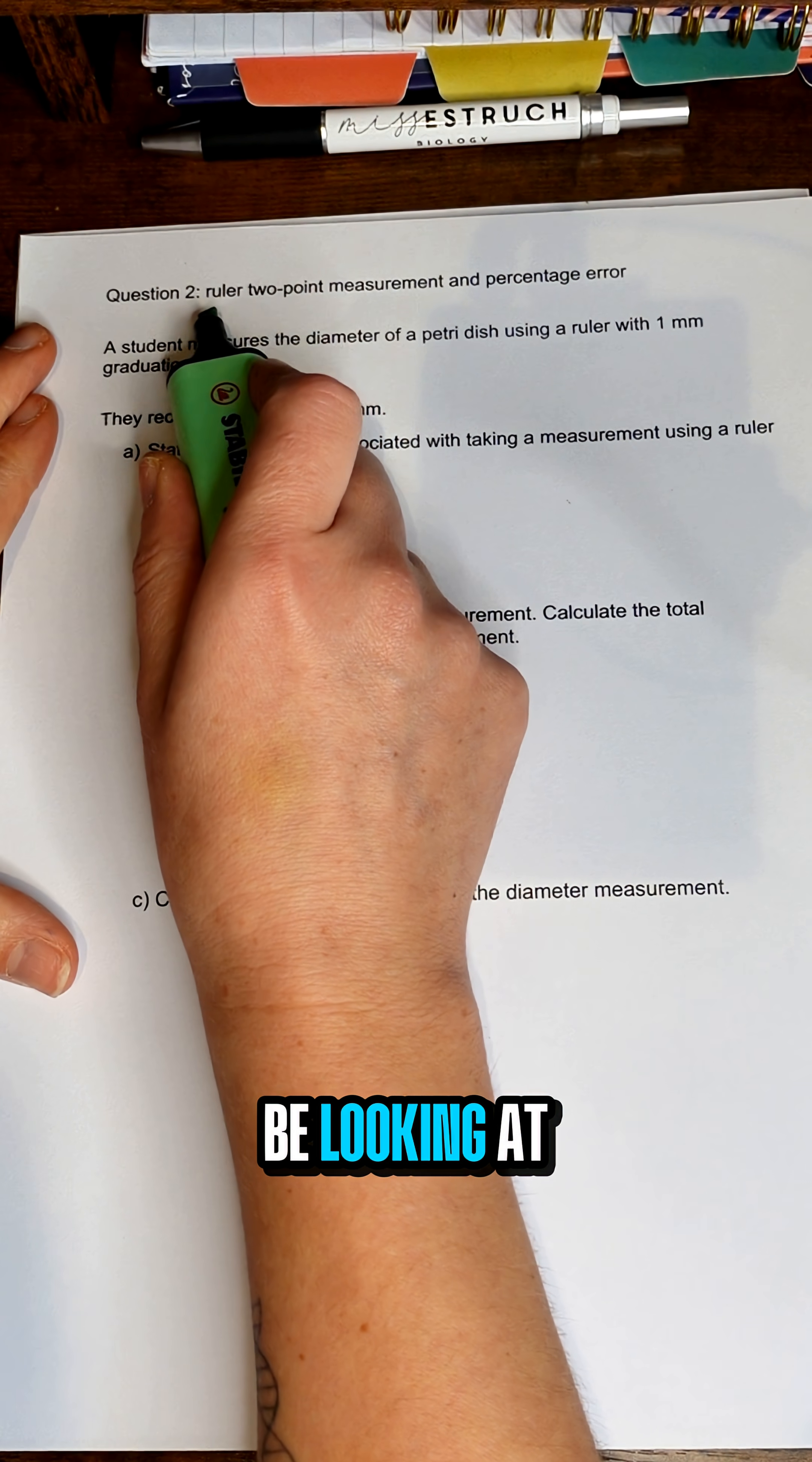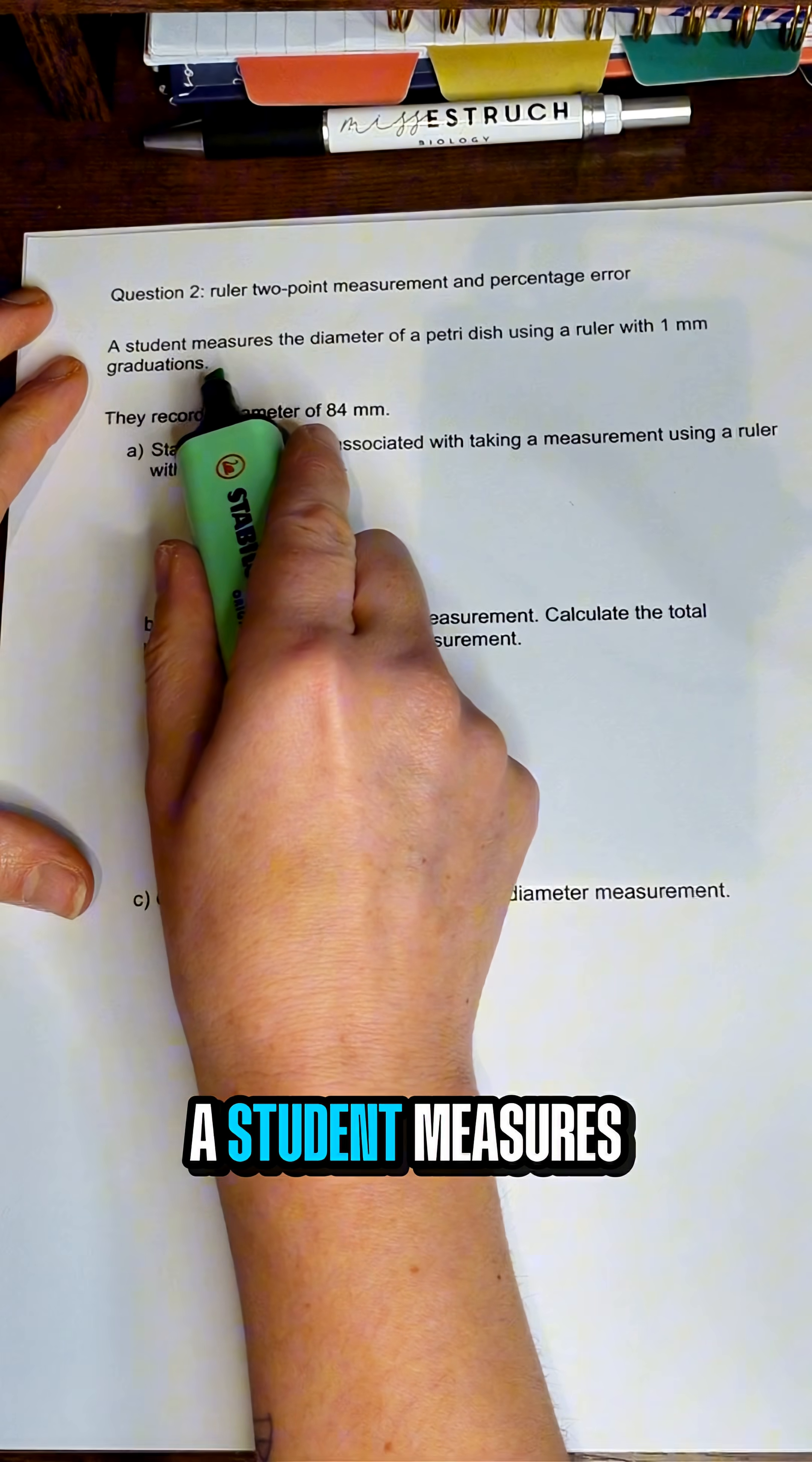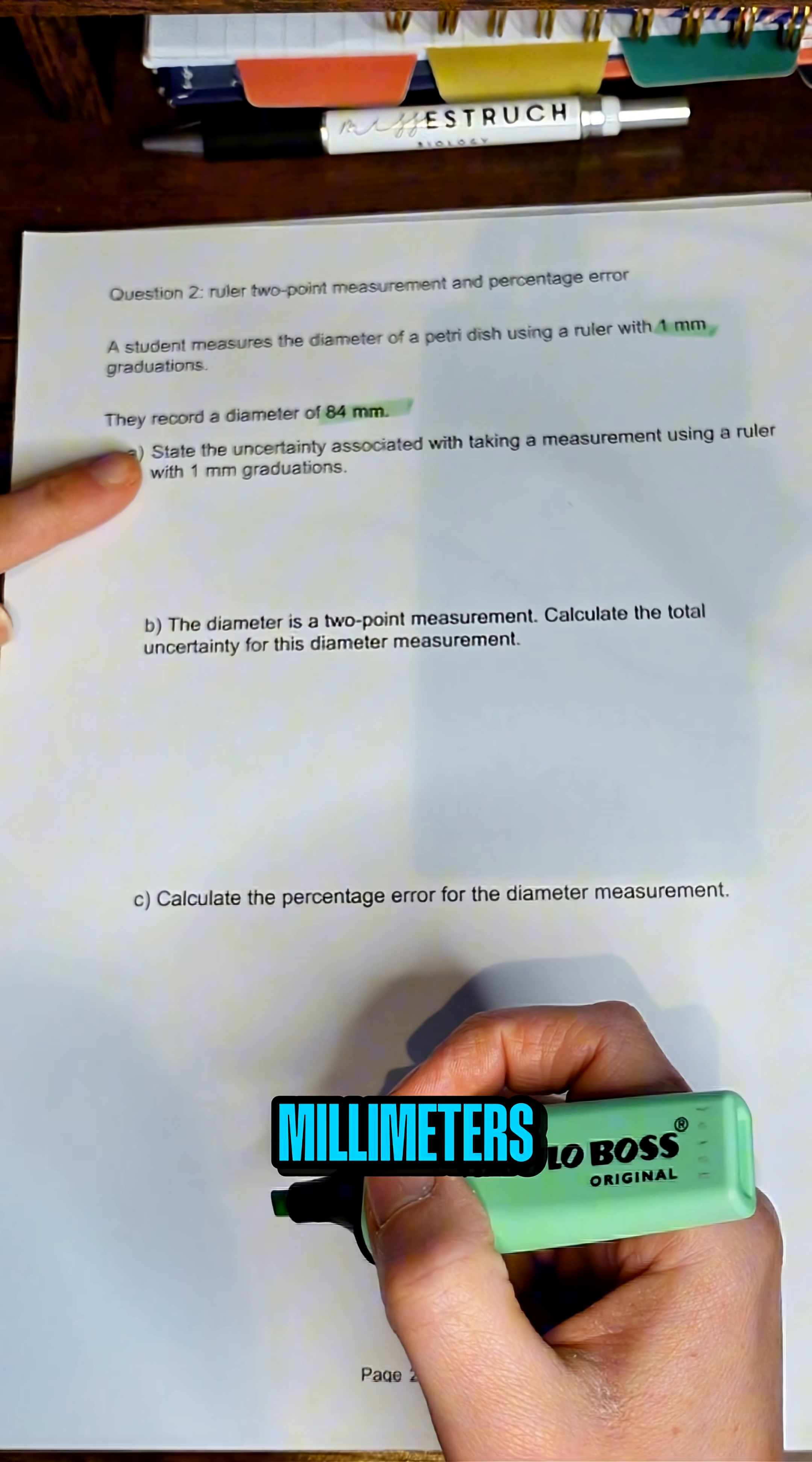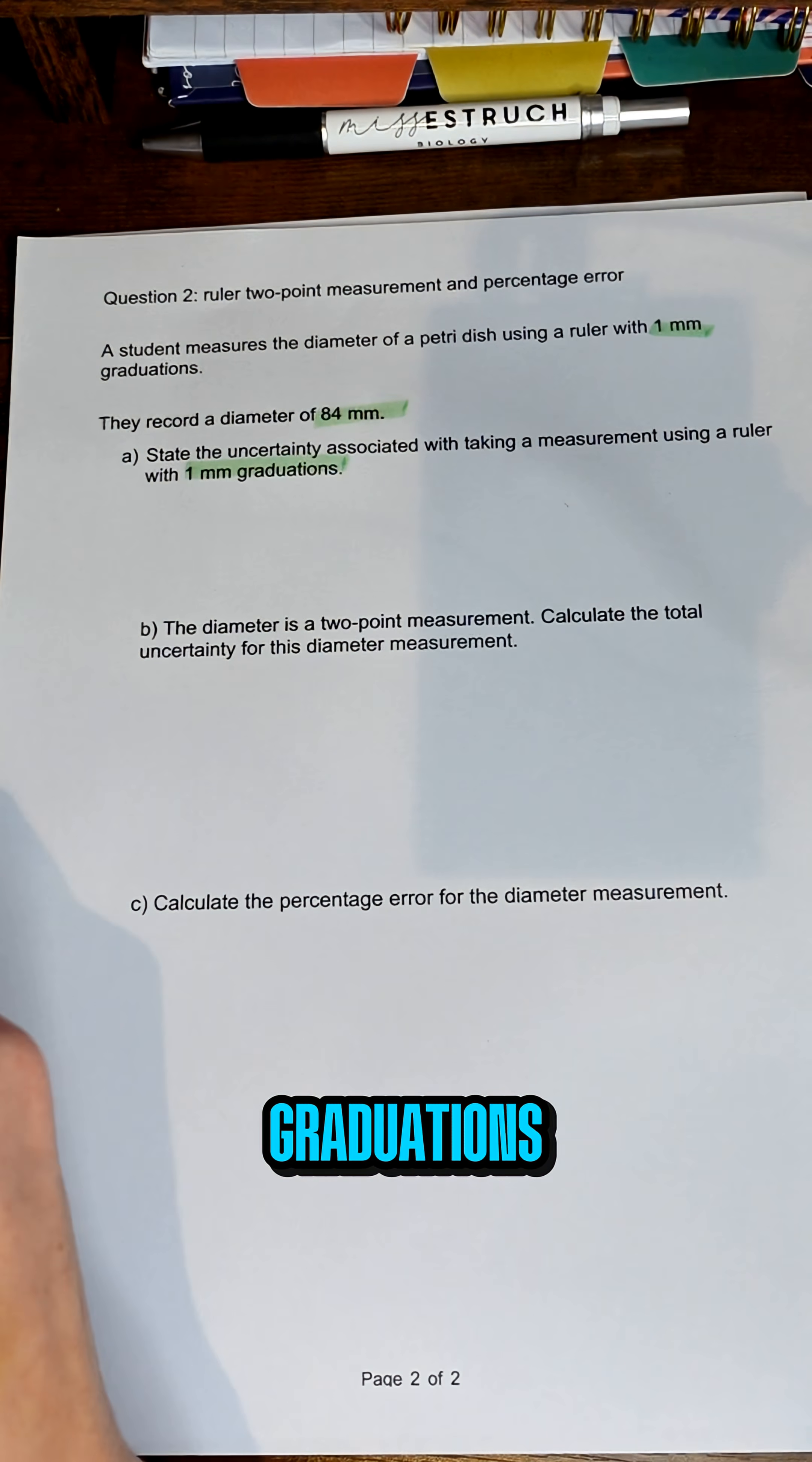In this example, we're going to be looking at a ruler which has two points of uncertainty because you've got where you place the ruler at the start and the end point. A student measures the diameter of a petri dish using a ruler with one millimeter graduations. They record a diameter of 84 millimeters. State the uncertainty associated with taking a measurement using a ruler with one millimeter graduations.